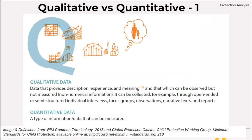This is also true when considering qualitative and quantitative methods. The PIM common terminology defines qualitative data as data that provide description, experience and meaning, and that can be observed but not measured — non-numerical information. This data can be collected, for example, through open-ended or semi-structured interviews, focus group discussions, observations, narrative texts and reports.